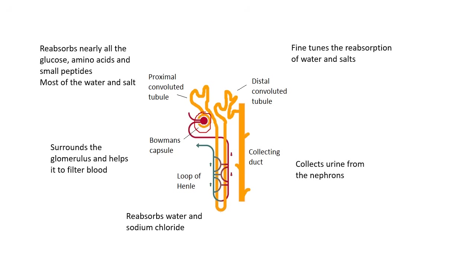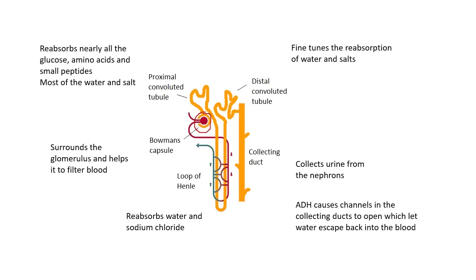Then what's left over goes into the collecting duct. Lots and lots of collecting ducts join together and form the ureter, which takes the liquid urine to the bladder. Something else happens in the collecting duct: a hormone called ADH causes channels to open up in the collecting duct, which lets water escape back into the blood.